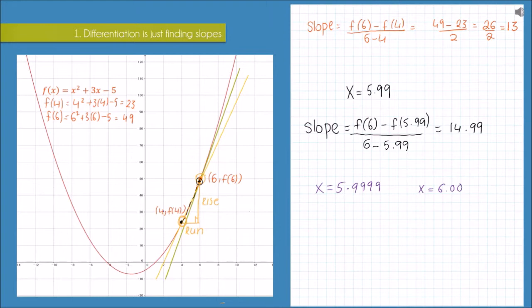I can maybe take x to be 5.9999 or just slightly bigger than 6 at 6.0001, and that would give me values for a slope of 14.9999 or 15.0001. And as you can see, I'm getting closer to the real value of 15 each time.